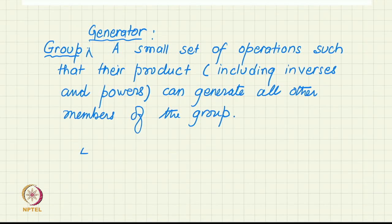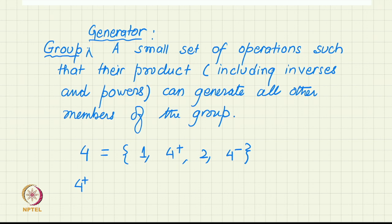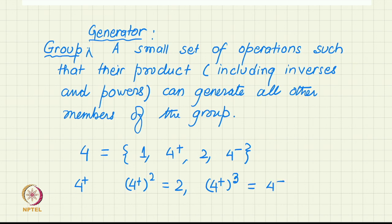A simple example: consider point group 4. Point group 4 has 4 operations: 1, 4+, 2, and 4−. If we just consider the group element 4+, all other operations can be written as a product or power of 4+. For example, 4+ squared gives 2, 4+ cubed gives 4−, and 4+ to the power of 4 gives 1. So all operations of this point group can be generated by 4+, making 4+ a generator of this group.